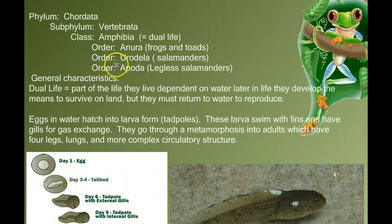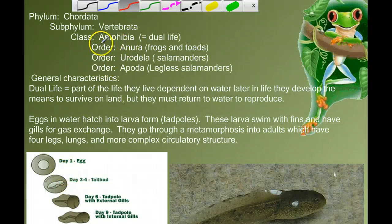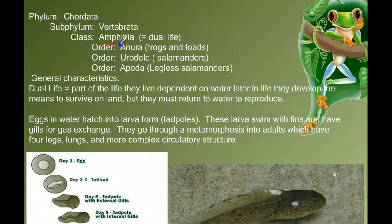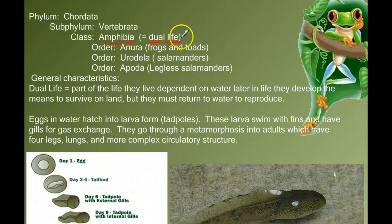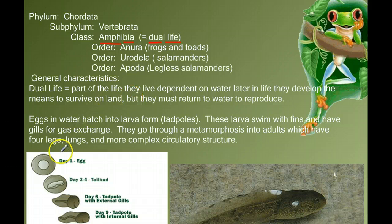The first thing we need to do is look at what the word Amphibia means. Amphi means dual. Bia means life. Dual life. Think about what you know about amphibians and see if that makes sense. The defining characteristic of this class of animal is that they live part of their life in water, dependent on water, and part of their life on land.